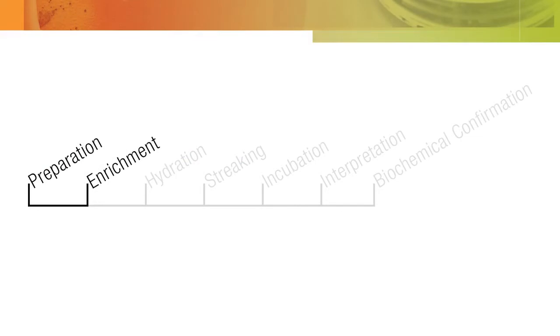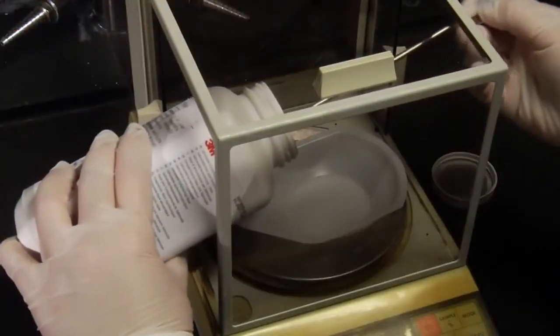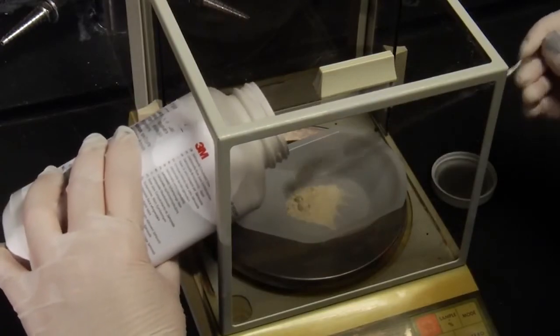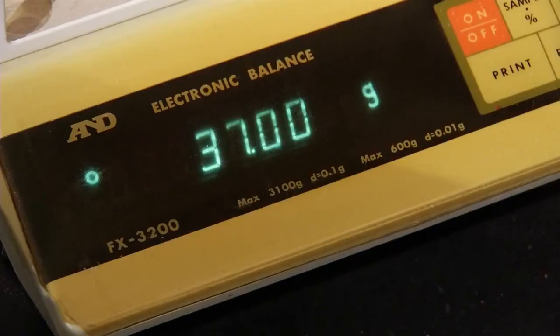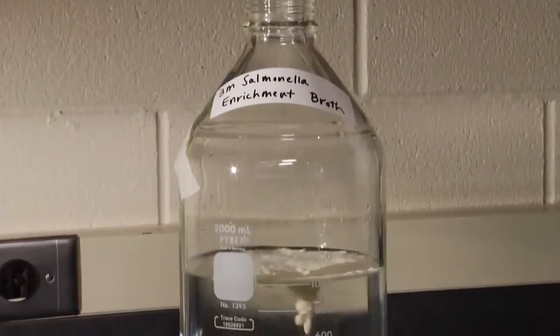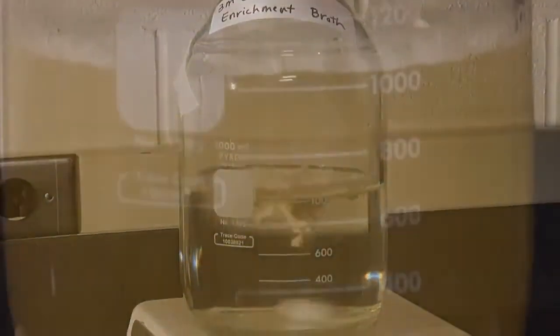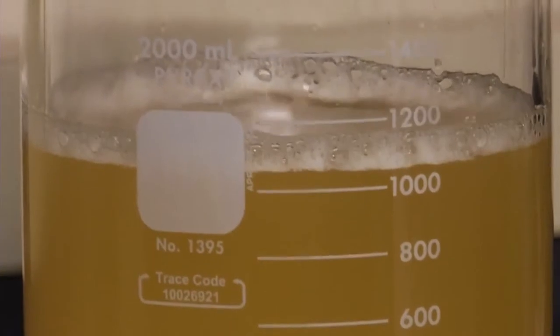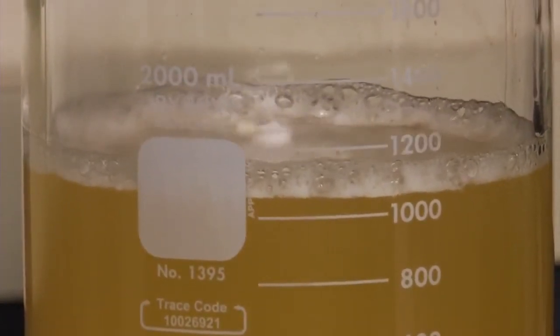The next step is the enrichment procedure. In order to prepare 1 liter of 3M Salmonella Enrichment Base, weigh 37 grams of dehydrated base powder and add it to 1 liter of water. Follow the product instructions to mix, dissolve, and sterilize the media.